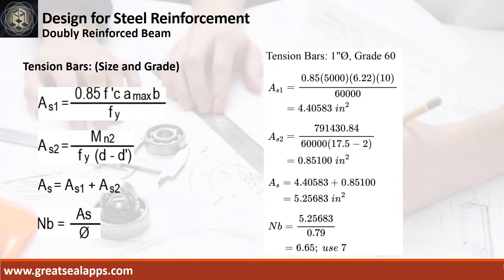The area of steel from stress block AS1 equals 4.40583 square inches, and the area of steel from additional moment AS2 equals 0.851 square inch. For a total area of steel, AS equals 5.25683 square inches, and the number of bars for 1 inch diameter is 7.